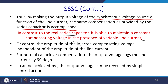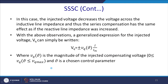We can control the amplitude of the injected compensating voltage independent of the amplitude of the line current. For normal capacitive compensation, the output voltage lags the line current by 90 degrees. By reversing the control action, the injected voltage decreases the voltage across the inductive line impedance, and thus the series compensation has the same effect as if the reactive line impedance was increased.